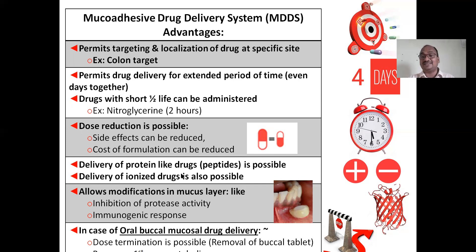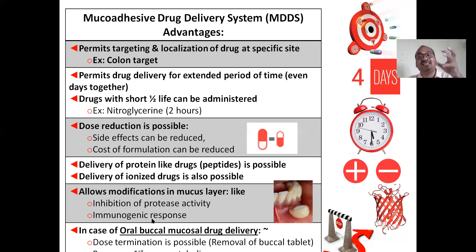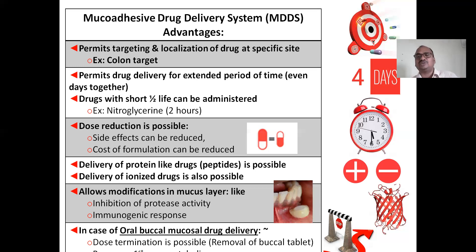Delivery of protein and peptide drugs is also possible because it alters the mucous layer — it allows modification of the mucous layer so that proteins and peptides transfer easily. Ionized drugs, which are normally very difficult to absorb — whether positively or negatively charged — can also be accommodated, because these formulations cause structural changes in the mucous membrane, enlarging the mucosal pores so that proteins, peptides, and ionic drugs are all transferred and absorbed easily.